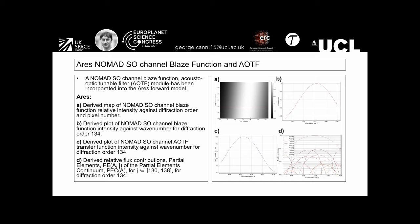Here we show ARIES NOMAD solar occultation blaze functions and acousto-optical tunable filters. The diagrams here have been incorporated into ARIES. A shows a derived map of NOMAD solar occultation channel blaze function with relative intensity against diffraction order and pixel number.